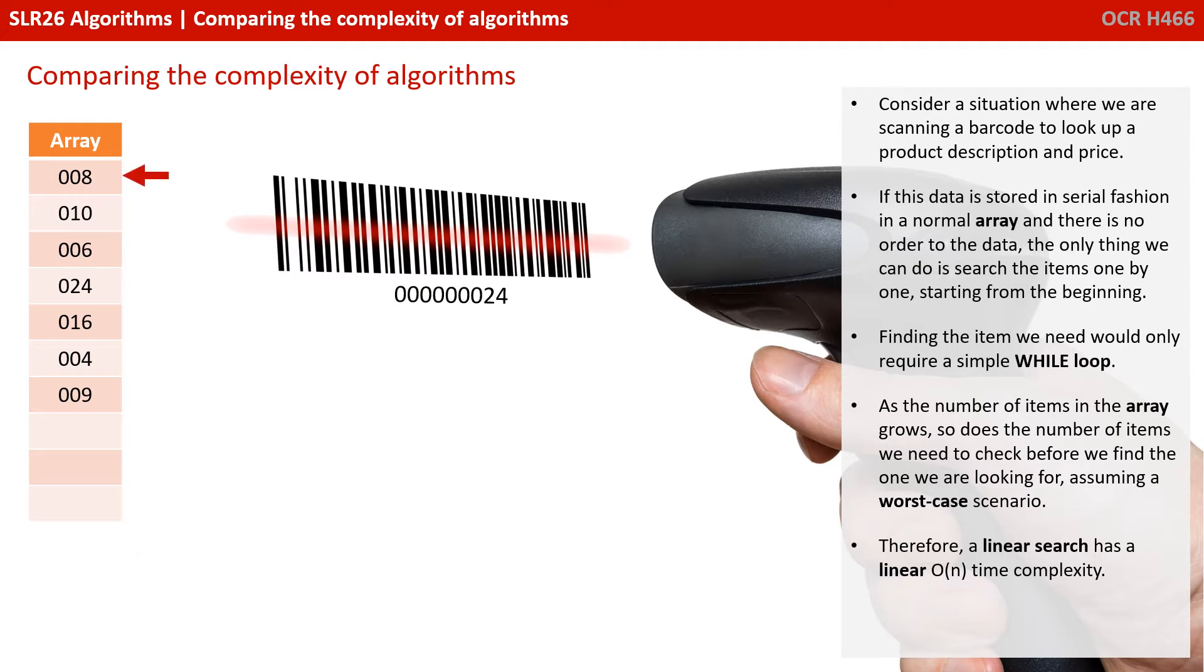Consider a situation where we are scanning a barcode to look up a product description and price. If this data is stored in serial fashion in a normal array and there's no order to the data, the only thing we can do is search the items one by one starting from the beginning. Finding the item we need would only require a simple while loop. As the number of items in the array grows, so does the number of items we need to check before we find the one we're looking for, assuming a worst case scenario. Therefore, a linear search has a linear time complexity.